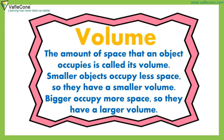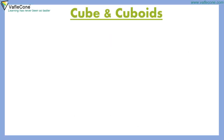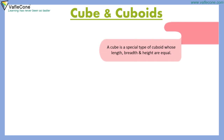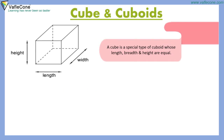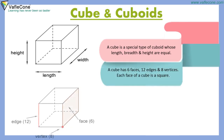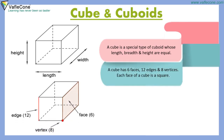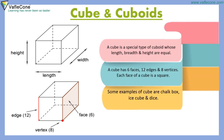Volume: The amount of space that an object occupies is called its volume. Smaller objects occupy less space, so they have smaller volume. Bigger objects occupy more space, so they have larger volume. A cube is a special type of cuboid whose length, breadth and height are equal. A cube has 6 faces, 12 edges and 8 vertices. Each face of a cube is a square. Examples of a cube include a chalk box, ice cube and dice.